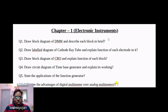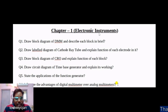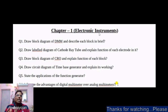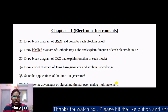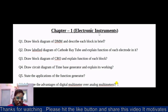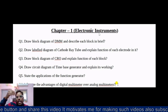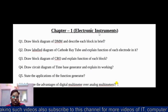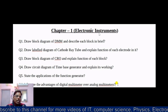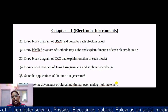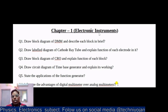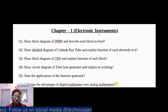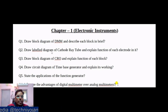We'll start with Chapter 1: Electronic Instruments. The first question is: draw the block diagram of a DMM (Digital Multimeter) and describe each block in brief. The diagram carries two marks. You should also explain the process flow of the DMM, and if possible, include one advantage or one disadvantage.